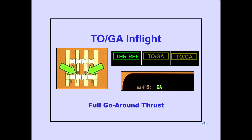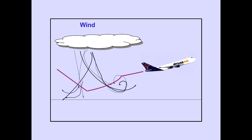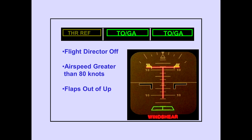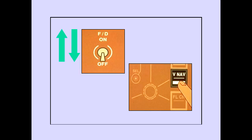A second push of the TOGA switch will activate the autothrottle in the thrust reference mode. As the windshear dissipates, the Autopilot Flight Director system smoothly transitions back to normal takeoff or go around function of the TOGA mode. Thrust reference remains displayed until another mode is selected. If the TOGA switch is pushed with the flight directors off, airspeed greater than 80 knots and flaps out of up, the command bars will automatically be displayed and provide the appropriate commands. To reset the flight director, either cycle the flight director switches or select another autopilot mode.